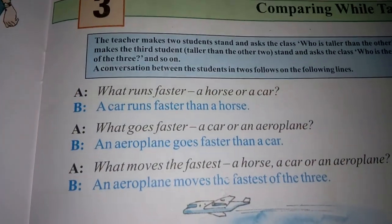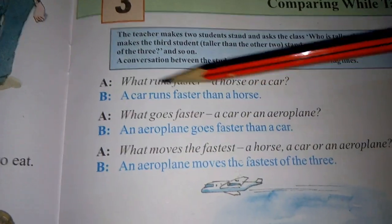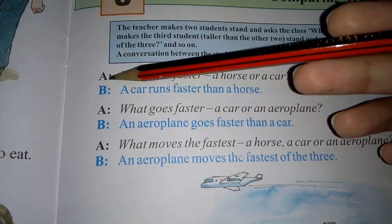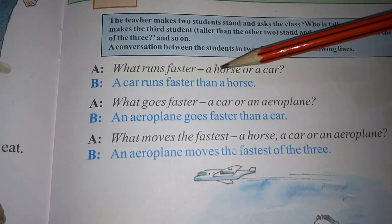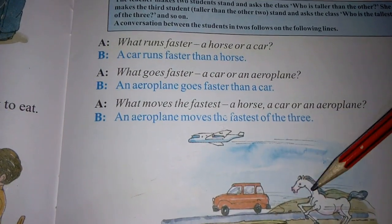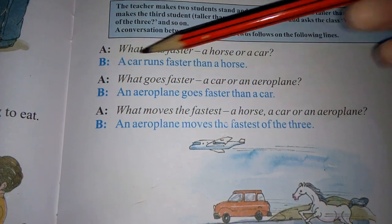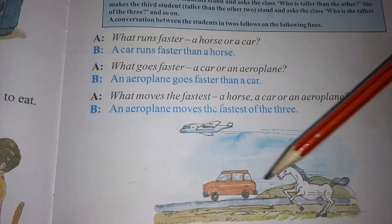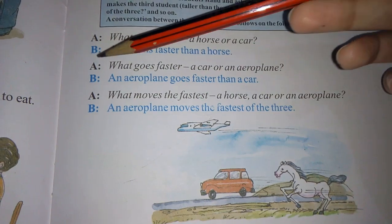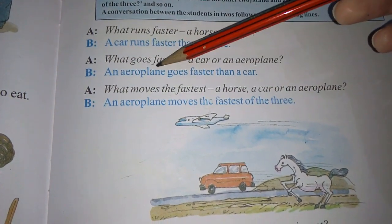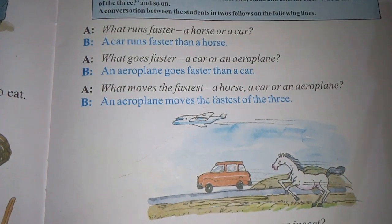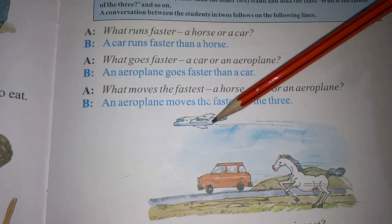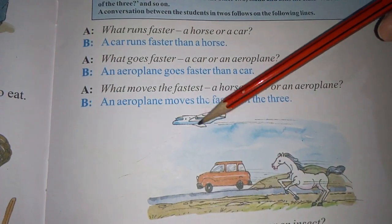Open page number 7. First, two characters are given, A and B. Firstly A asked, 'What runs faster, a horse or a car?' Then B replied, 'A car runs faster than a horse.' Then again A asked, 'What goes faster, a car or an aeroplane?' Then B replied, 'An aeroplane goes faster than a car.'